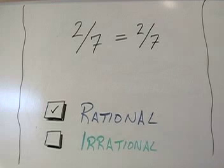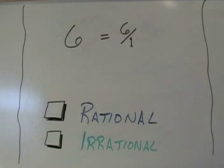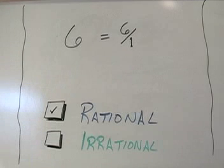How about whole numbers, like six? Remember you can write a whole number as a fraction by writing a one underneath it. In this case, six over one. This is a fraction. This is a rational number. Any whole number is also a rational number.